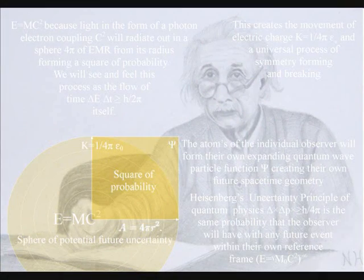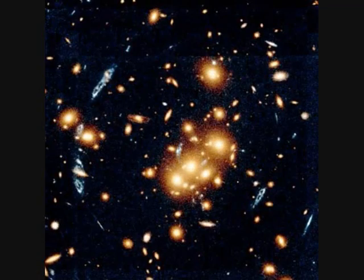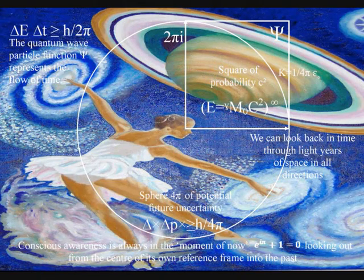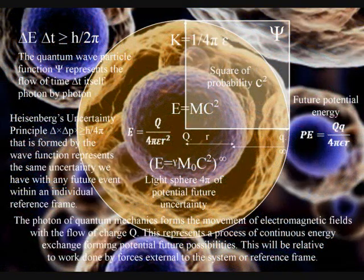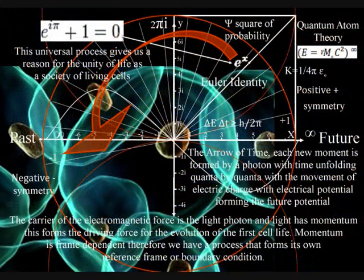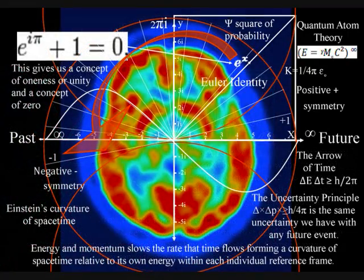This process forms an infinite number of reference frames within our universe. Only the uniqueness formed by an infinite number of reference frames could have created the complexity of cellular life, with the creative and original process of thinking forming a potential infinity of possibilities.